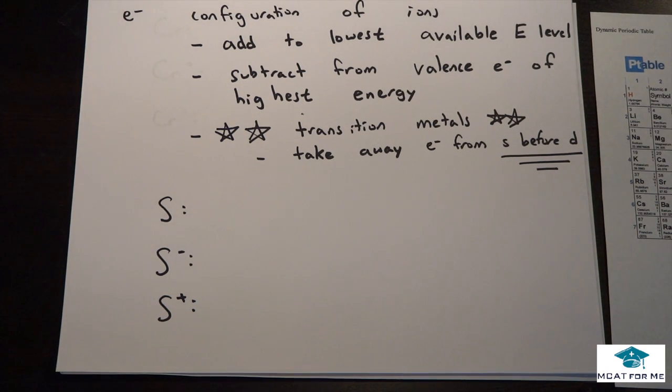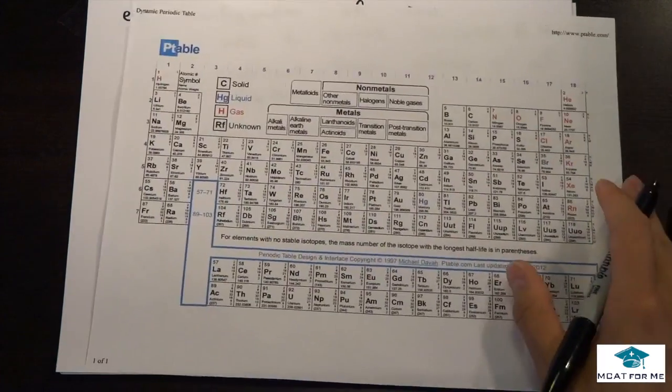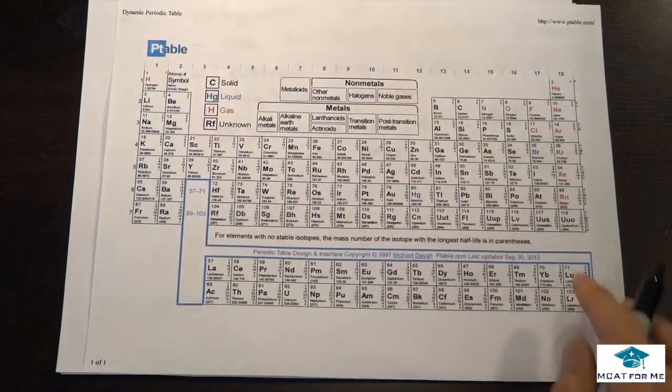If we want to subtract, we're going to subtract from the valence electrons of the highest energy level. We're not going to take off, for example, if we were looking at carbon, we're not going to take off something from the 1s, we're going to take it off from the 2p.